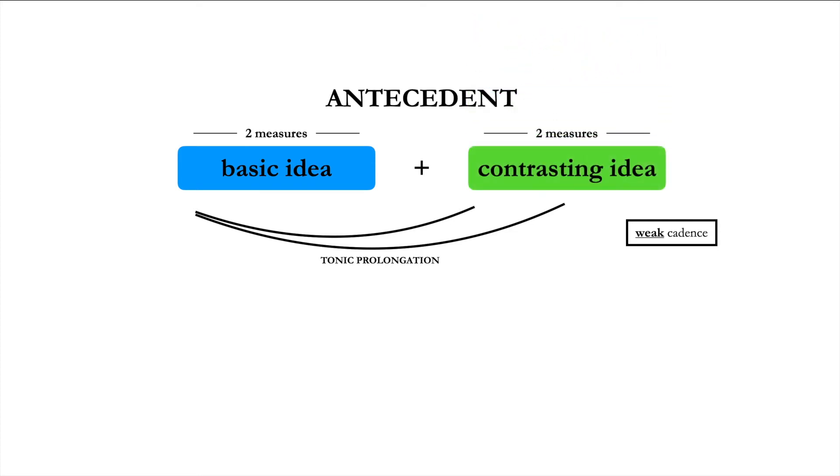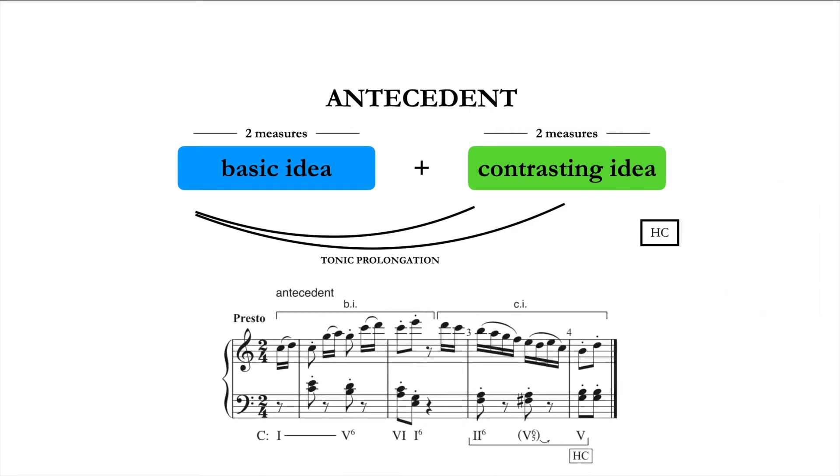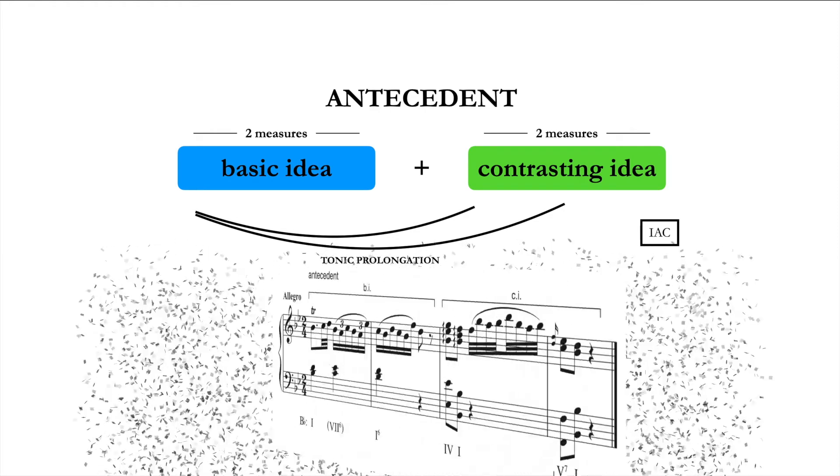When this process comes to an end, we can speak of a cadence, and in general, antecedents end with a weak cadence, usually half-cadences, as seen here, but occasionally imperfect authentic cadences, as seen here.